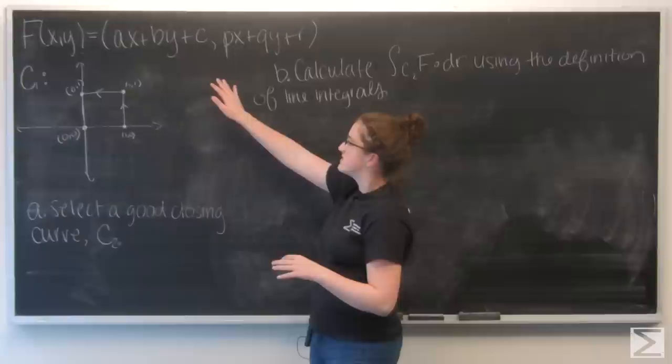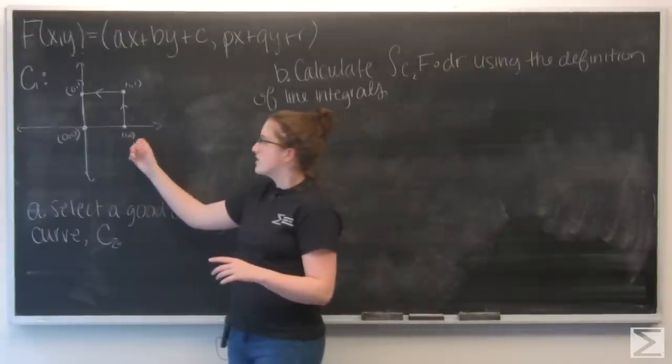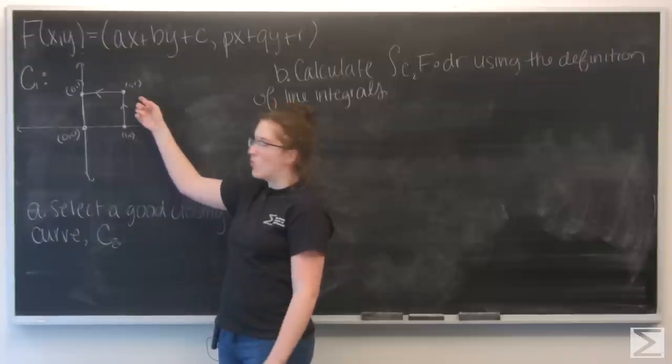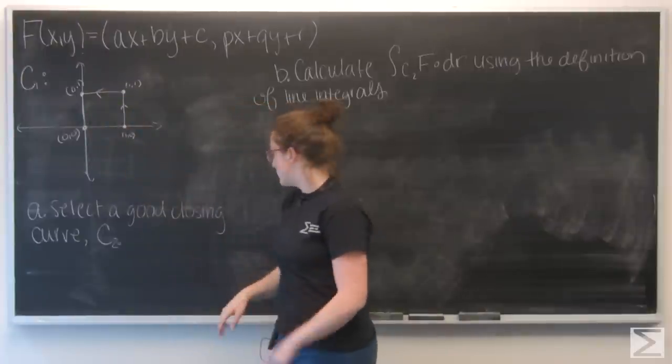For this problem, I'm given a force field f of x, y, and a curve that starts at the point (1,0), travels up to (1,1), goes to (0,1), and then goes down to (0,0).